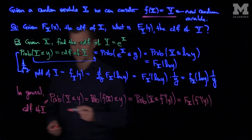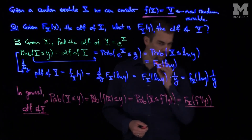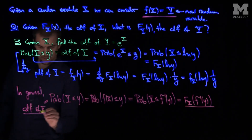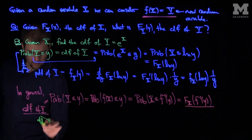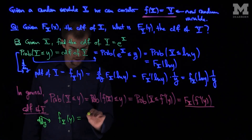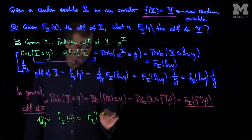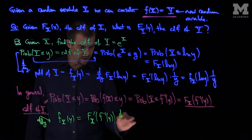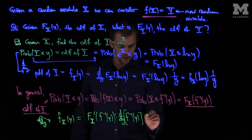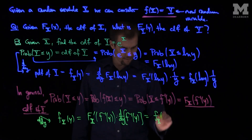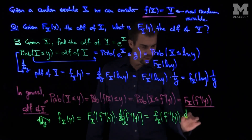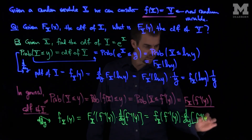Now I have the CDF of Y in terms of the CDF of X, evaluated at the inverse of the transformation function. If we differentiate this with respect to y, we get the PDF of Y, which equals F_X prime of f⁻¹(y) times d/dy of f⁻¹(y). Since F_X prime is just the PDF, this is f_X evaluated at f⁻¹(y) times the derivative of the inverse transformation with respect to y.